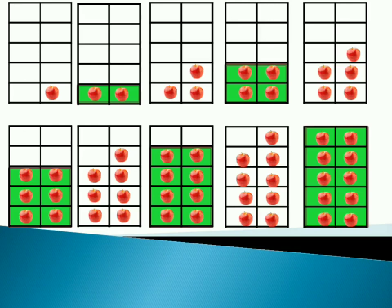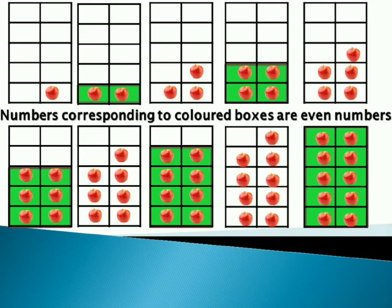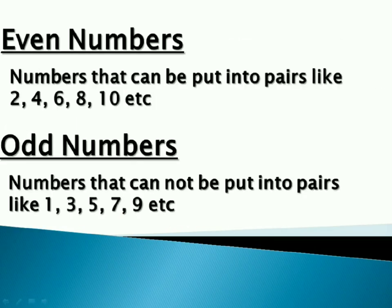There is a simple rule. Even numbers can make pairs, and odd numbers cannot make pairs. Numbers corresponding to coloured boxes are even numbers. Let's try with actual numbers. Even numbers always have 2, 4, 6, 8 or 0 on units place.